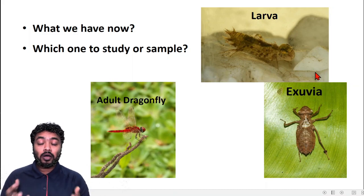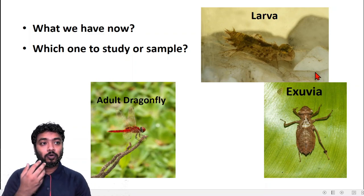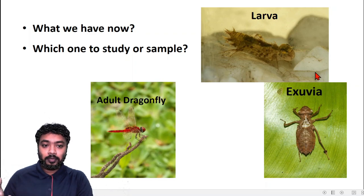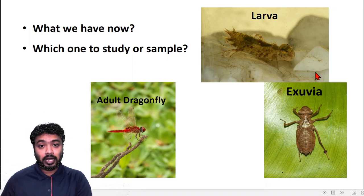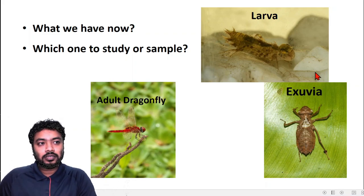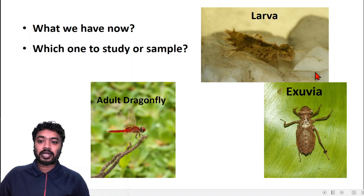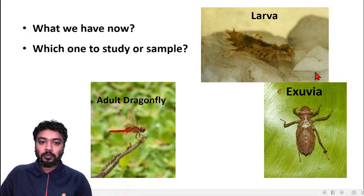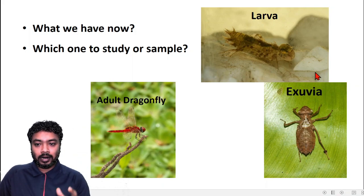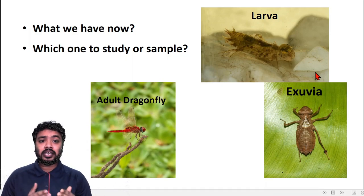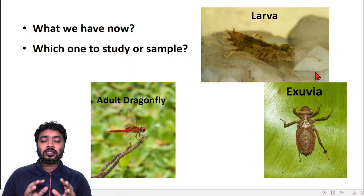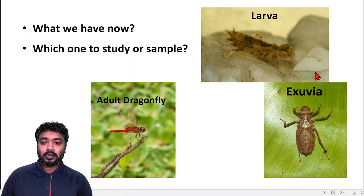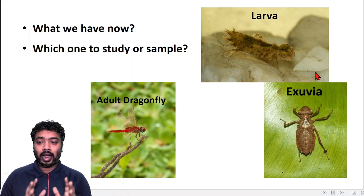If we sample along the bank of a water body we can get exuvia, but we often miss the adults because after emergence most species leave the breeding place. Most scientists now believe we should study both — larvae and adult — to get a better picture. Larval study is difficult, so it depends on the research question whether you study larvae, exuvia, or adults.